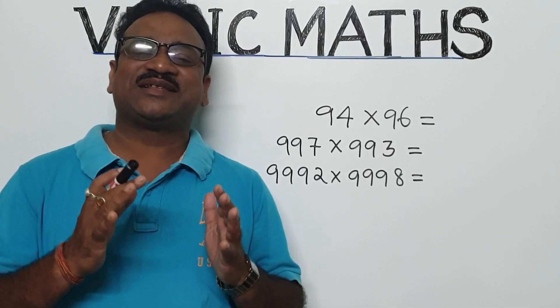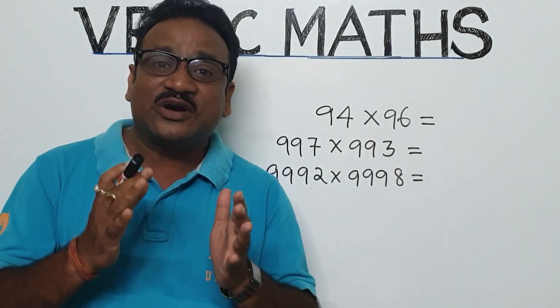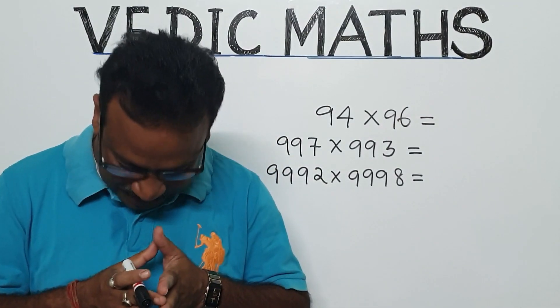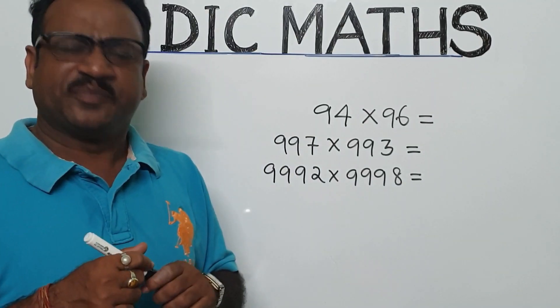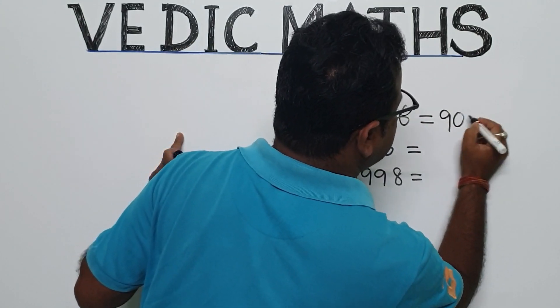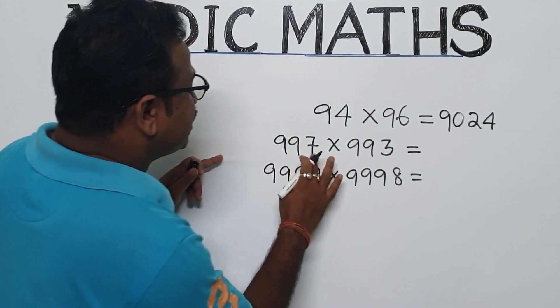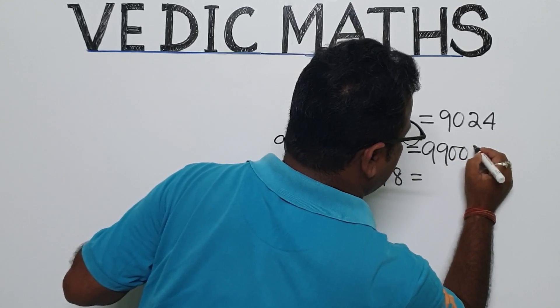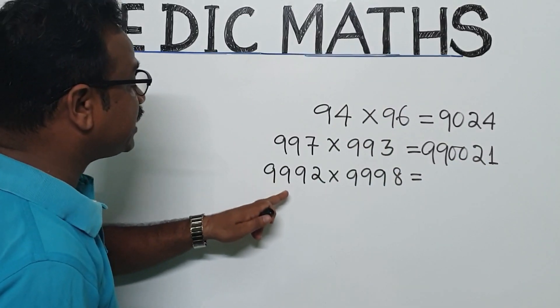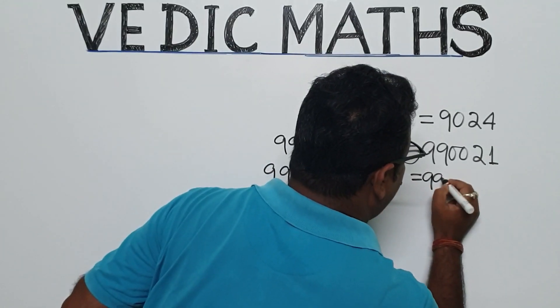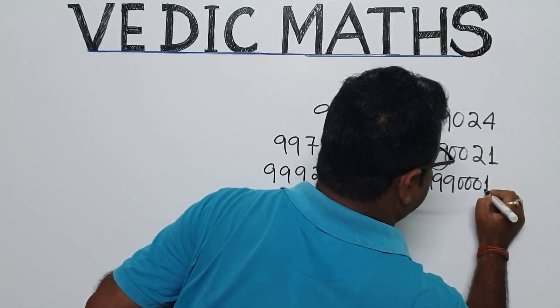First of all, I pay respects to Bhagat Guru Bhagat Krishna Tirthaji Maharaj. In Vedic Maths, 94 into 96, the result will be 9024. Then 997 into 993, the result will be 990021. And 9992 into 9998, the result will be 99900216.